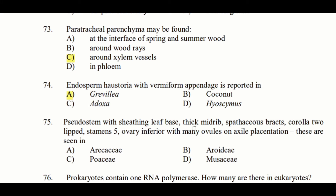Next question features: Pseudostem with sheathing leaf base, thick midrib, spathaceous bract, corolla tuliped, stamen 5, ovary inferior with many ovules on axial placentation — these are seen in Option A: Adikca, Option B: Arecaceae, Option C: Poaceae, Option D: Musaceae. The answer is Option D: Musaceae.